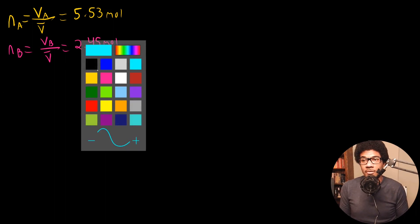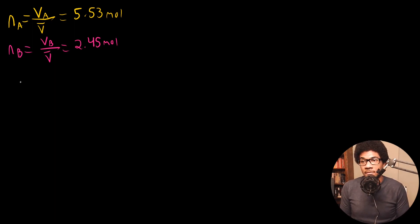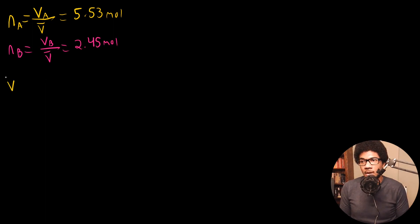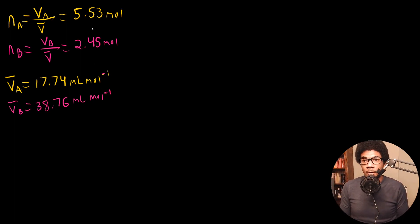Like I said earlier, the partial molar volume is dependent on the composition. For this 50-50 mixture (by volume), the partial molar volumes are as follows. For water, the partial molar volume V̄A equals 17.74 milliliters per mole. For methanol, V̄B equals 38.76 milliliters per mole. The molar composition determines what these partial molar volumes are.